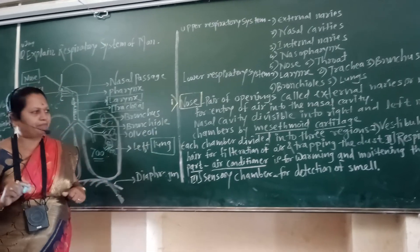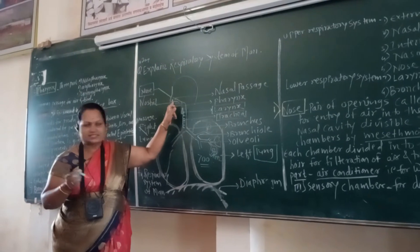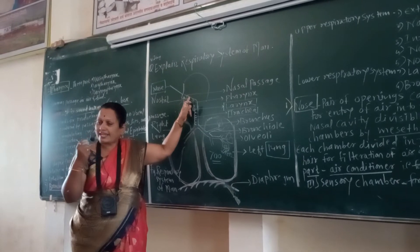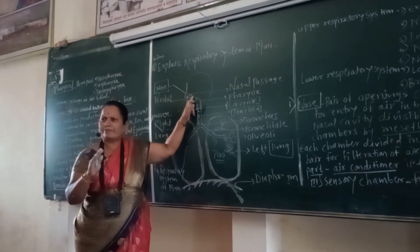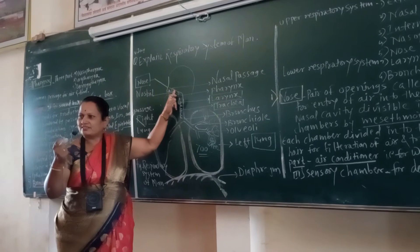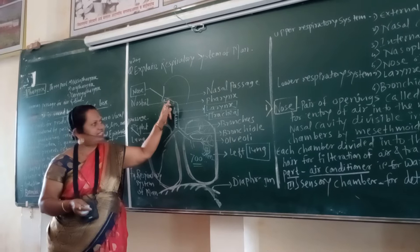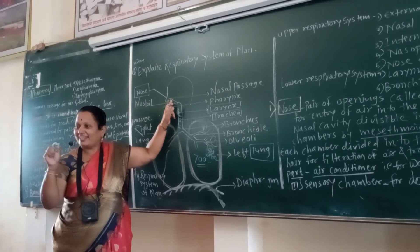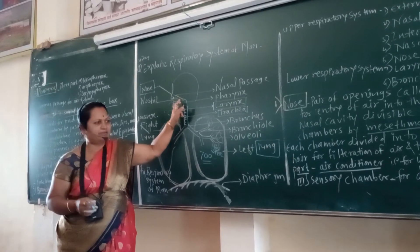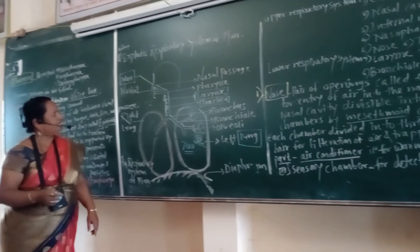Three functions of the nasal chamber: first, it consists of ciliated epithelium for filtration of air; second, air conditioning — air is moistened and warmed up to body temperature of 37 degrees; when cold air enters, it is warmed to body temperature, therefore this chamber is called the air conditioner; and third, it is a sensory chamber for the sense of smell.